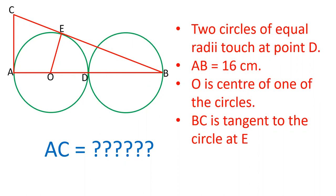When you join AB, AB is 16 centimeters. The point of contact of two circles will lie on the line joining the two centers. O and O-dash are the two centers of the circles.